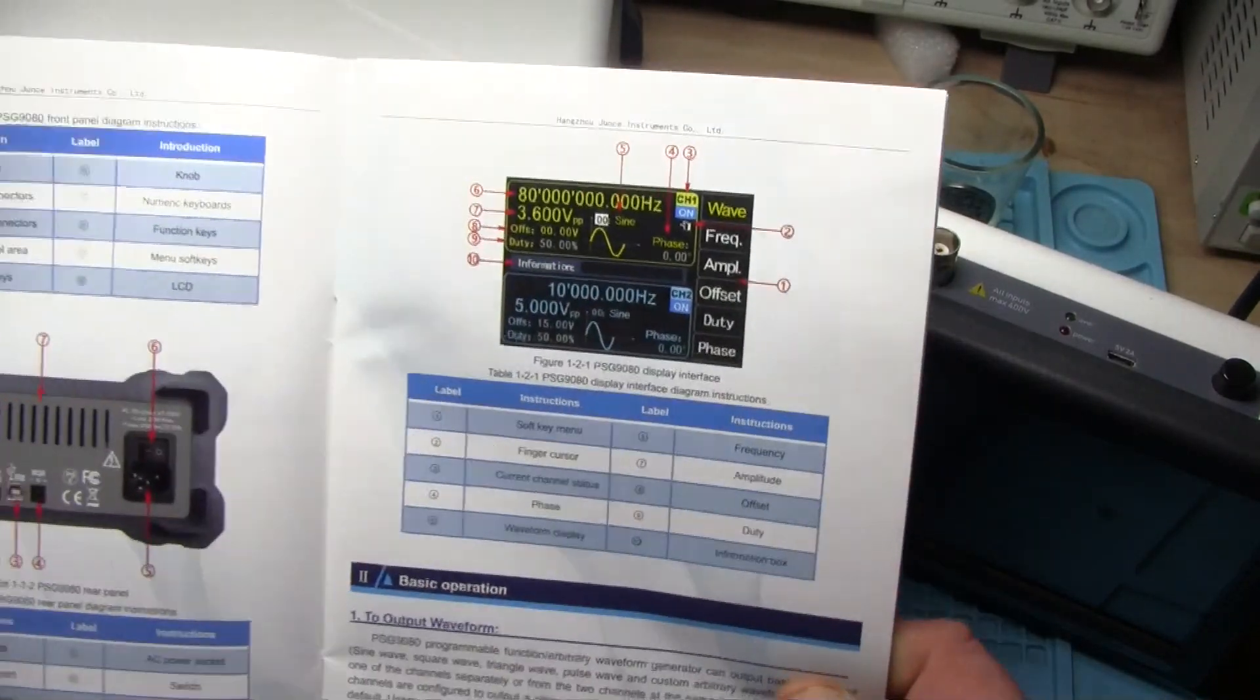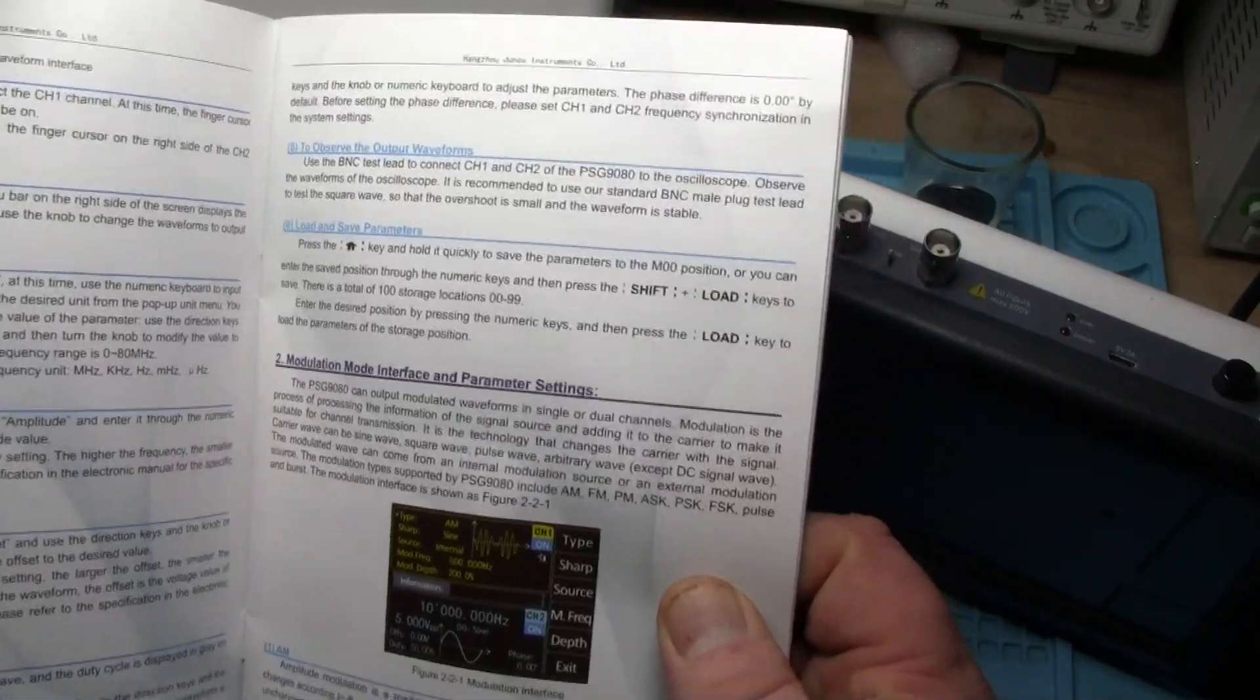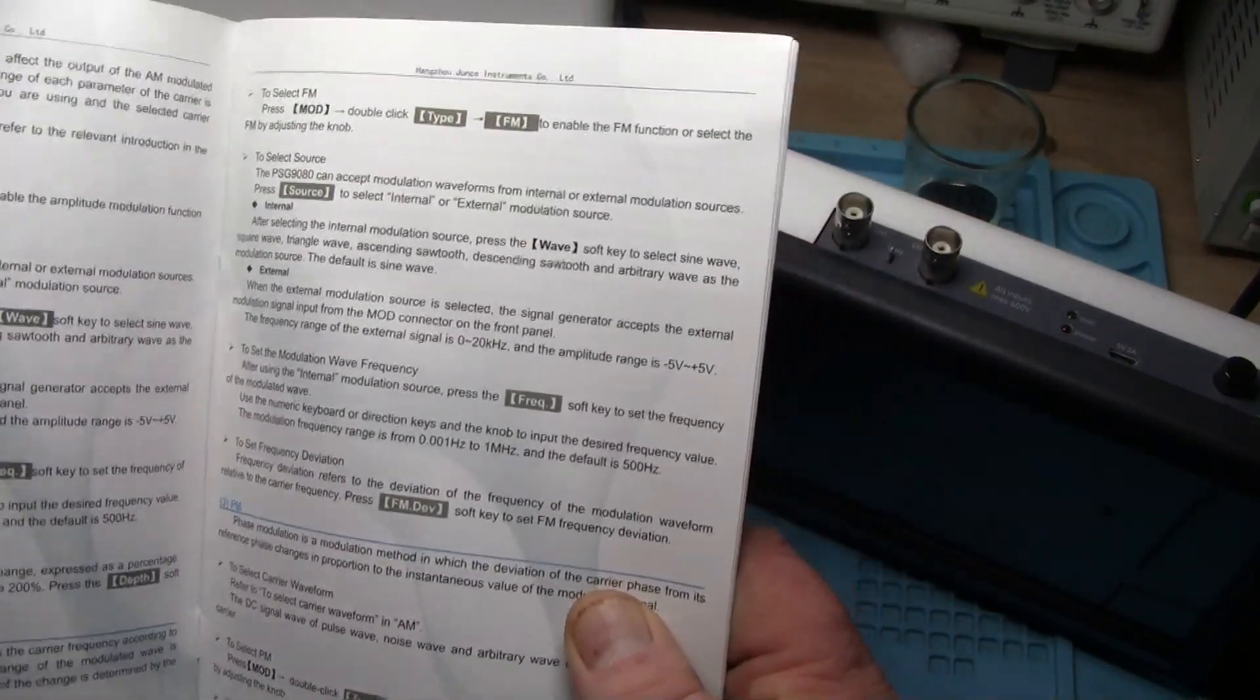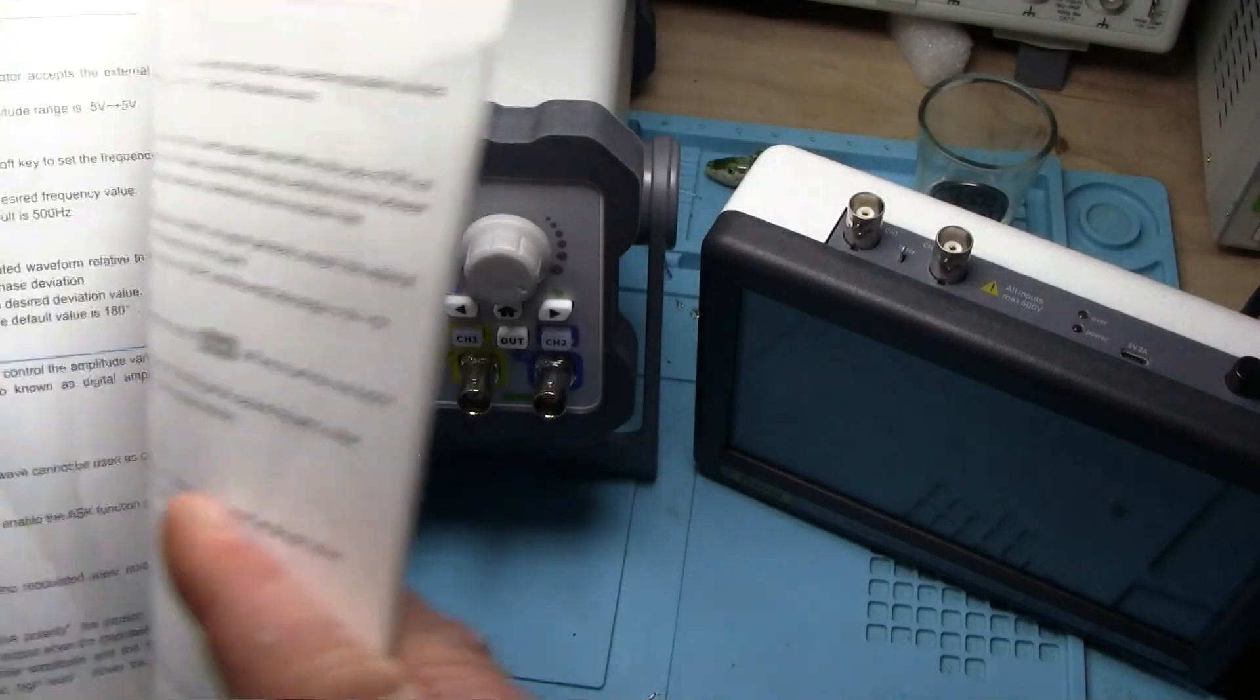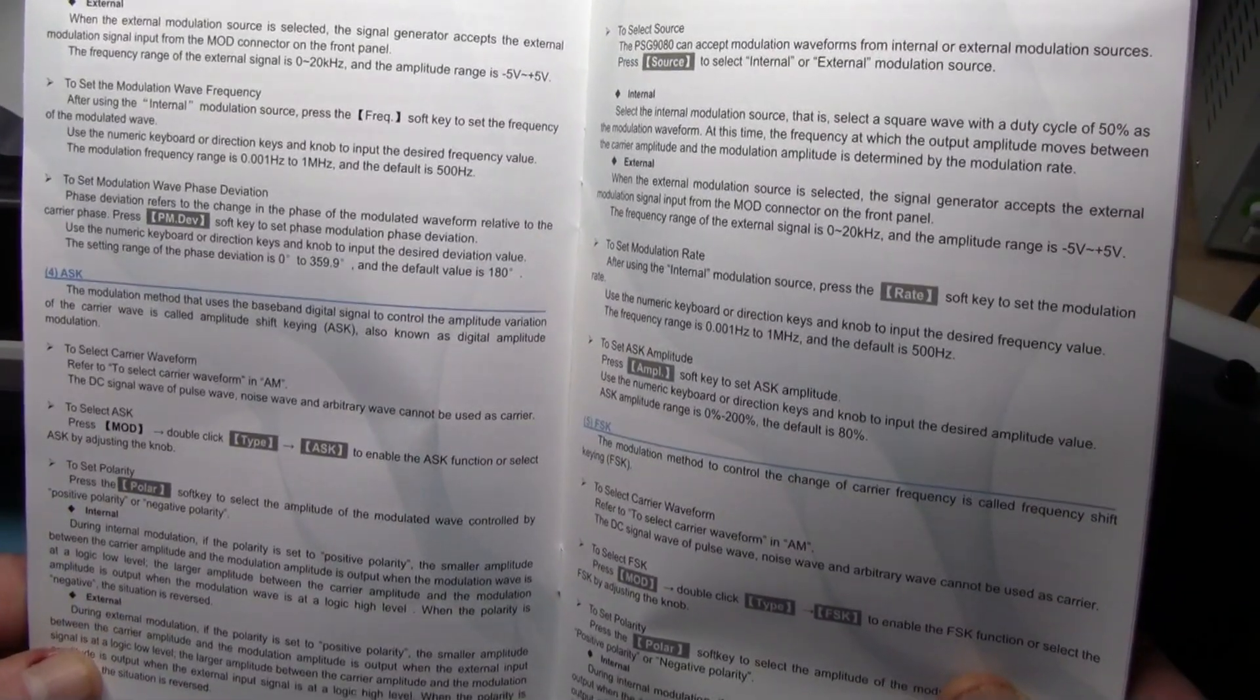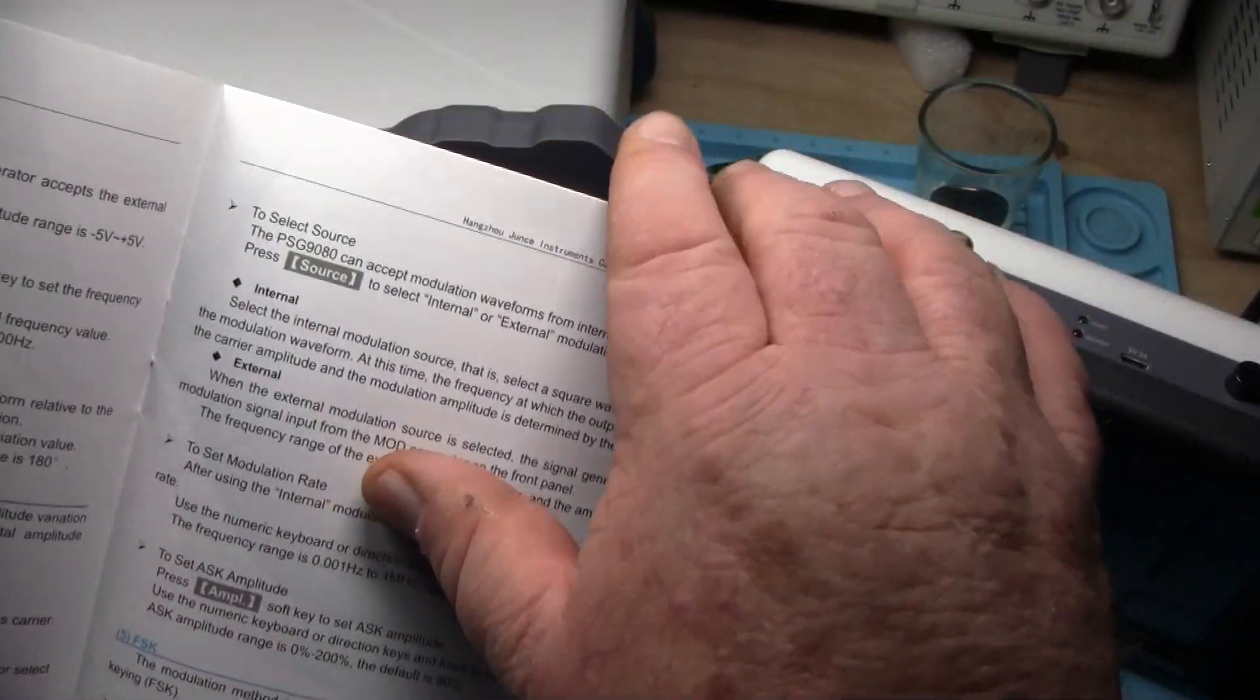It talks about modulation: AM, FM, PM phase modulation, which is a variation of FM. ASK modulation method uses the baseband digital signal to control amplitude variation of the carrier, which is amplitude shift keying, and FSK, which is frequency shift keying. This has a lot of modulation built into it.